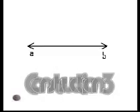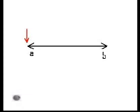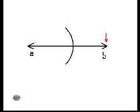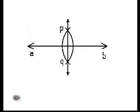Construction number three: constructing the perpendicular bisector and the midpoint of a segment. Given segment AB, place the compass point at A and with a radius greater than one-half AB but less than AB, construct an arc. Place the compass point at B and with the same radius, construct an arc that intersects the previous arc. Label the intersections P and Q. Draw a line PQ. Label the intersection with the line point M. PQ is the perpendicular bisector and point M is the midpoint of AB.